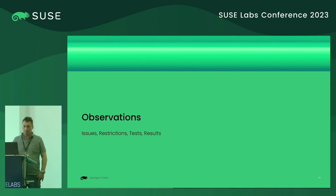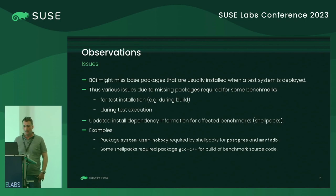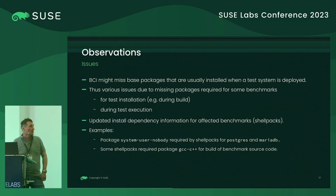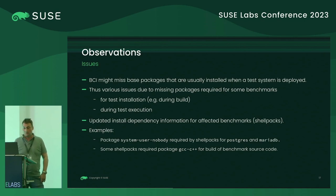Observations from MM tests in a containerized environment: the base container images might miss packages that are usually installed when preparing a test system or installing the base distribution. This caused some hiccups with shell packs because some packages were missing for test installation or execution. The easy solution was to update MM tests shell packs to add the missing installed dependency information. Examples are shell packs for Postgres and MariaDB — in the base container image, there was no user 'nobody' that was required, so the requirement for the package system-user-nobody was added to both shell packs. Another case was that the C++ compiler was missing and the requirement was not specified for some benchmark.